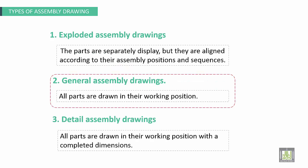Three types of assembly drawing we will explain now. First one is called exploded assembly drawing. The parts are separately displayed but they are aligned according to their assembly positions and sequences. Second, general assembly drawings. All parts in this drawing are drawn in their working position. Third type, detailed assembly drawing. All parts are drawn in their working position with the completed dimensions.